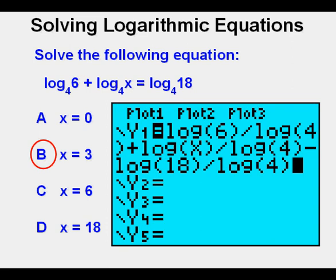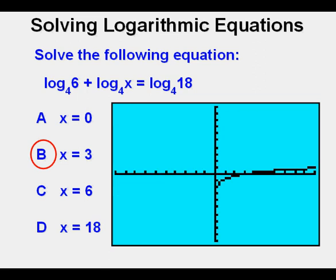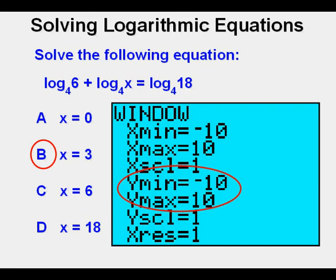We can also solve by graphing. We go to y equals and enter everything as we did in equation solver. Press graph or zoom 6. With this view we don't see exactly where it crosses except that we know we can eliminate answer A which is 0 and answer D which is 18. There are many ways we can go to take a better look and we'll start by changing the view screen window. This is the standard window view.